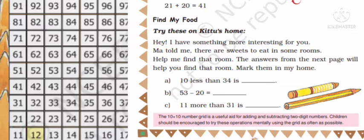Kittu's mother has given some clues. First clue is 10 less than 34. What is 10 less than 34? 34 minus 10 gives you 24.